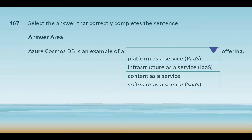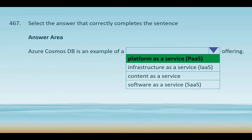Question number 467 is a fill-in-the-blanks question: Azure Cosmos DB is an example of which offering? Your options are platform as a service, infrastructure as a service, content as a service, and software as a service. Azure Cosmos DB is a fully managed platform as a service offering. It handles underlying infrastructure management tasks such as provisioning, patching, and backup on behalf of the user, allowing developers and businesses to focus on building applications and accessing data without worrying about managing servers or infrastructure.